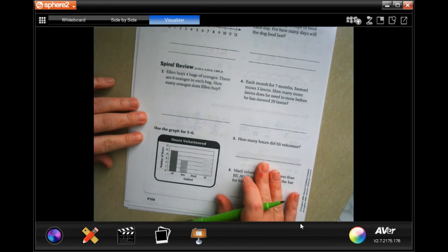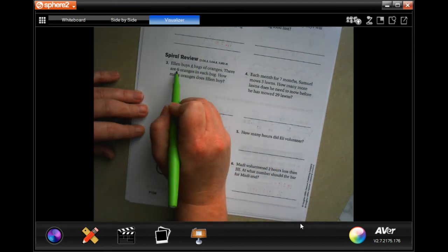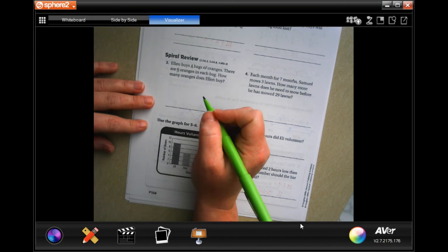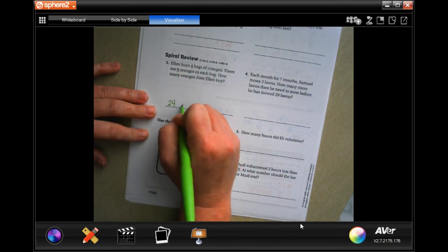We're going to go down to the spiral review. It says Ellen buys four bags of oranges, there are six oranges in each bag. How many oranges does Ellen buy? Well, six times four is 24 oranges.